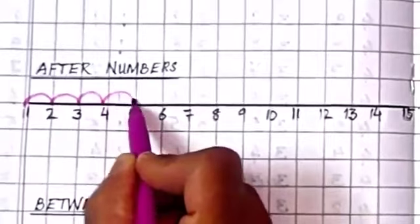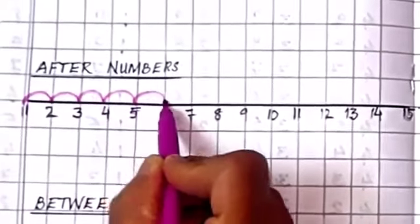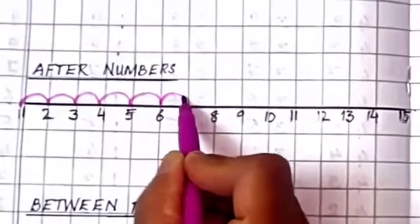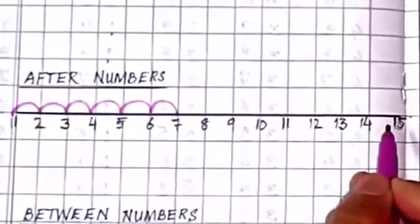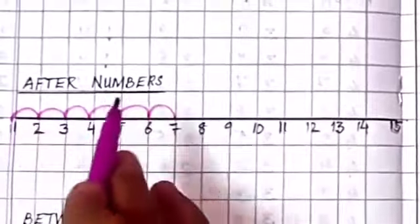After 4, 5. After 5, 6. After 6, 7. So like this, we will just move in a forward counting. This is after numbers.